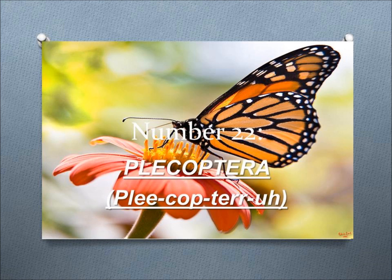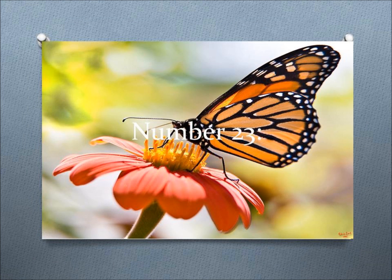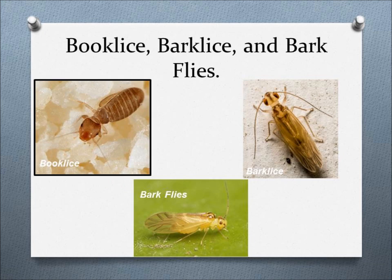Number 22, Plecoptera. This order includes stoneflies, which are insects that are good indicators of good or excellent water quality. Number 23, Psocoptera. This order includes book lice, bark lice, and bark flies, minute insects that live hidden away under bark, hidden in leaf litter, and also in books.